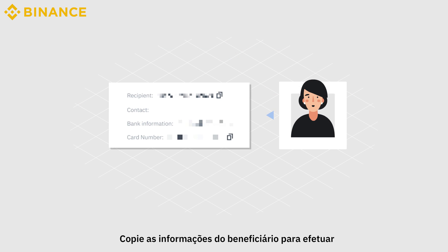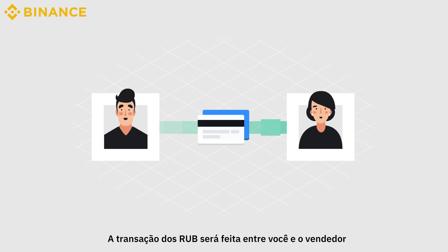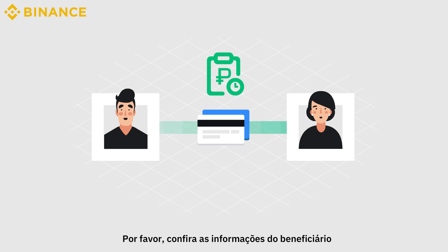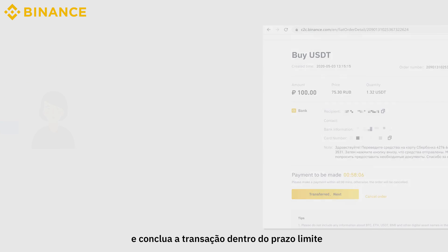Copy the payee information to make payment as instructed. The RUB transaction is made outside of the Binance platform between you and the seller. Please double-check the payee information and complete the transaction within the time limit.